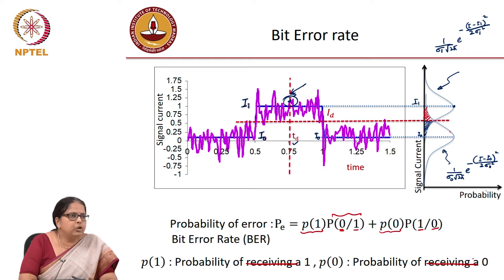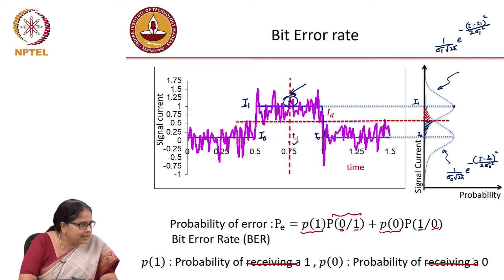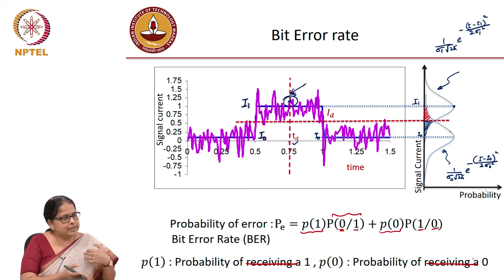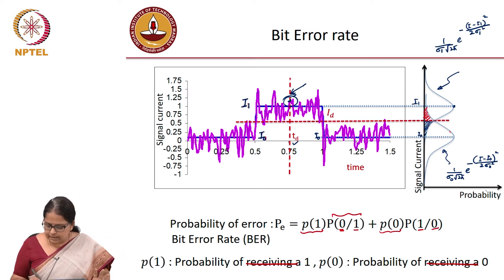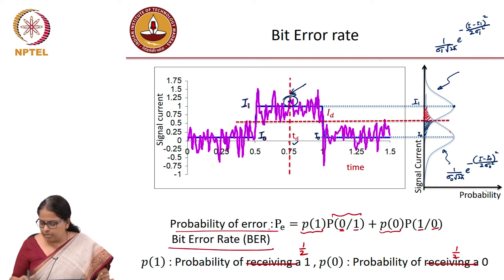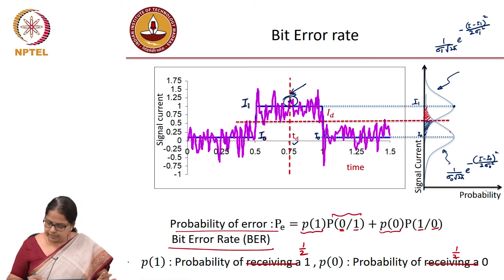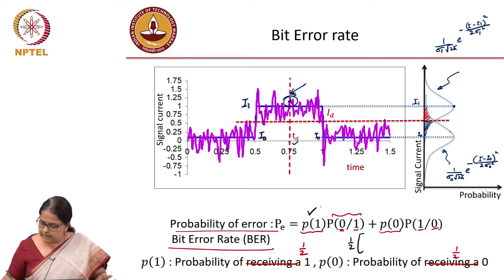If you have a pseudo-random bit sequence and your message is statistically general, you will have equal probability of sending a 1 and sending a 0. That means P(1) is 1/2 and P(0) is also 1/2. So the bit error rate, which is the probability of error, is equal to half of the probability of detecting a 0 given that I have transmitted a 1.